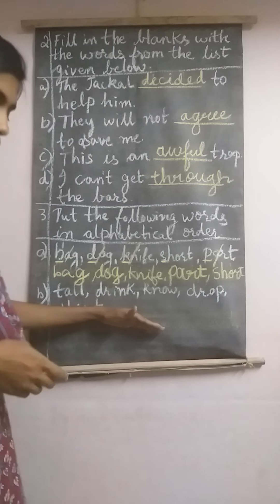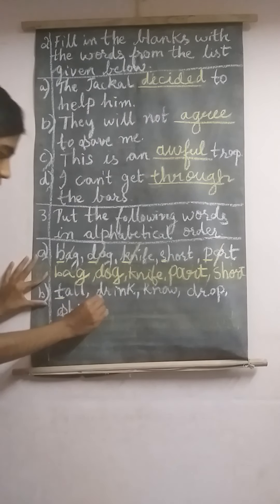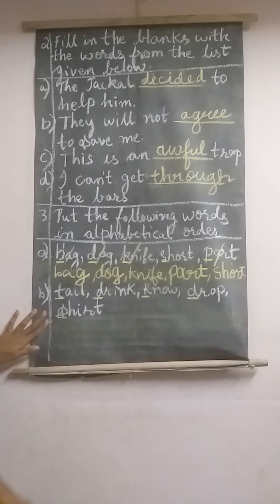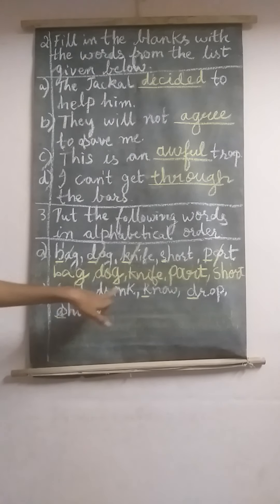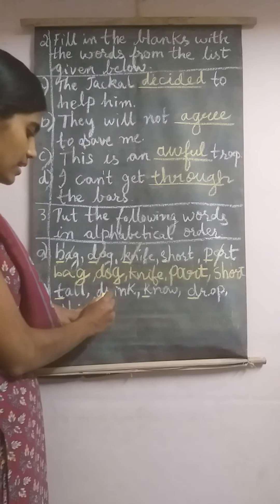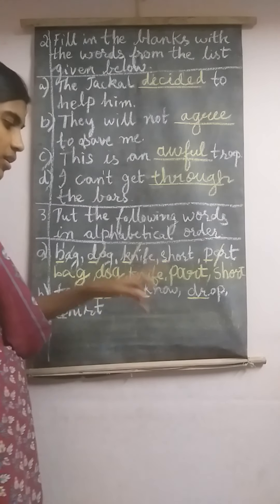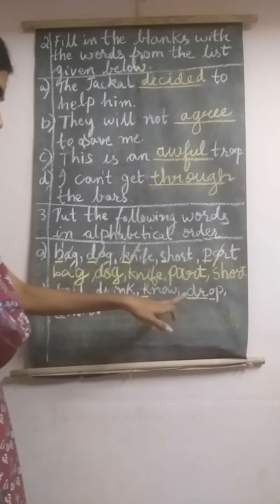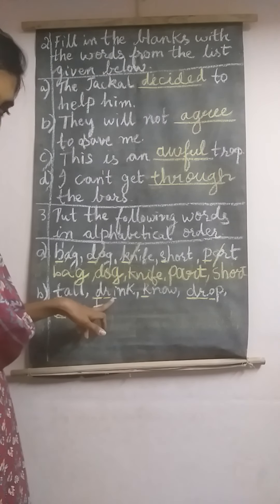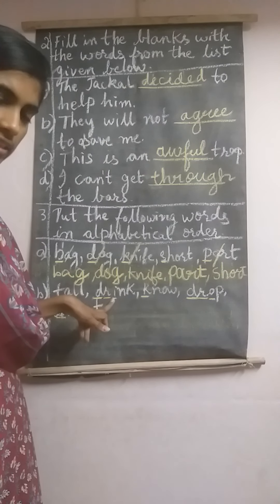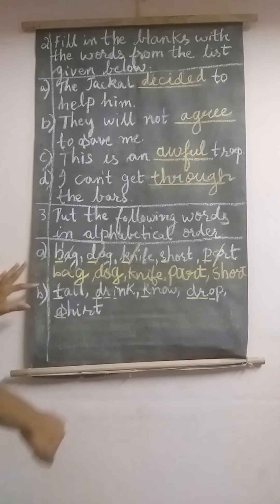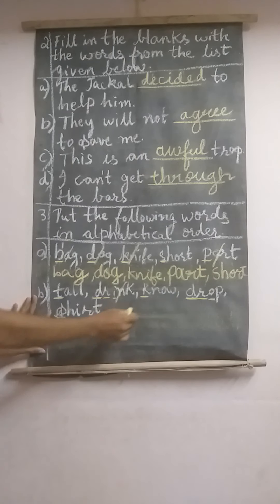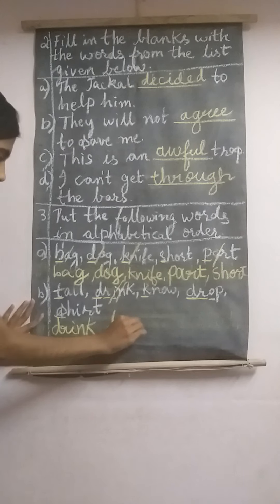Let us proceed to the next set. The starting letters are T, D, K, D. Which will be the first word? D appears two times, so compare the next letters. Both have the same second letter, so compare the third — I or O? I comes before O in the alphabet. So the word with D-R-I is 'drink.' Write 'drink.' Next is D-R-O-P — 'drop.'